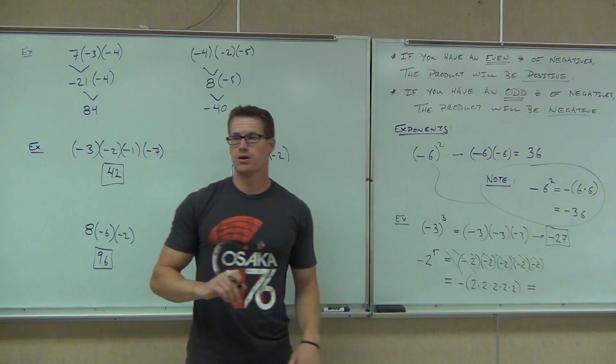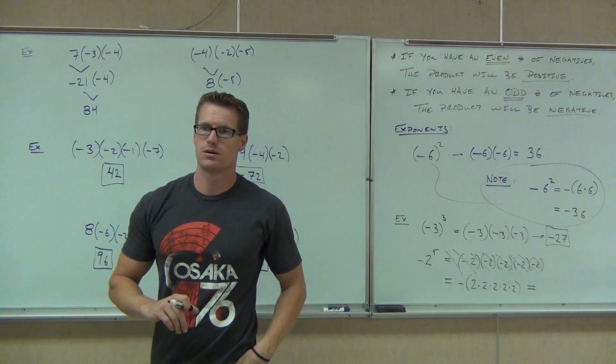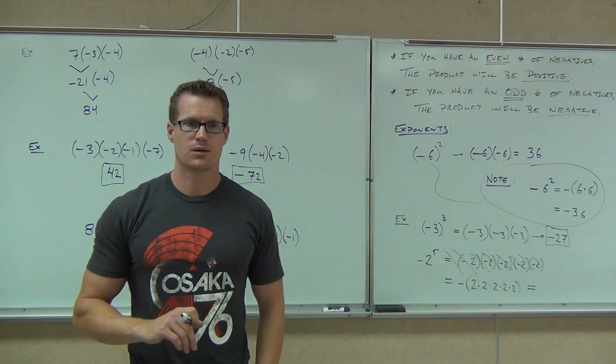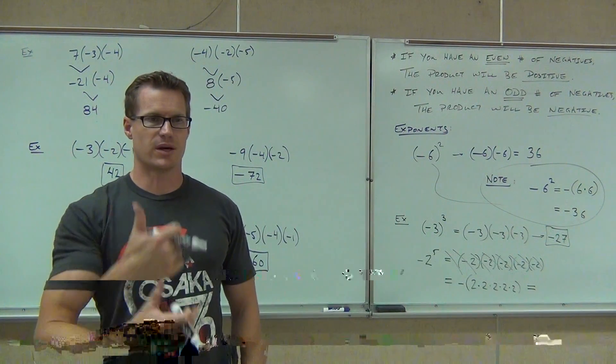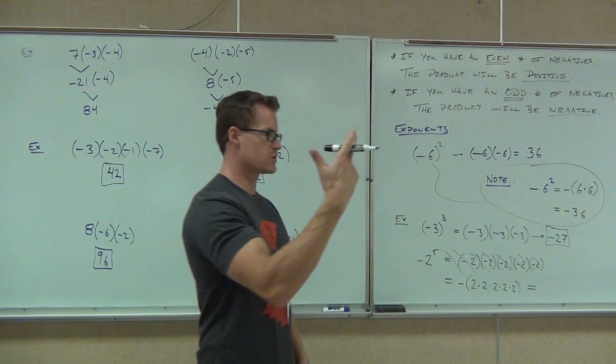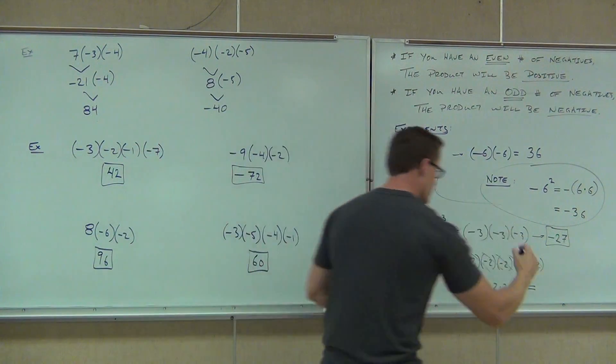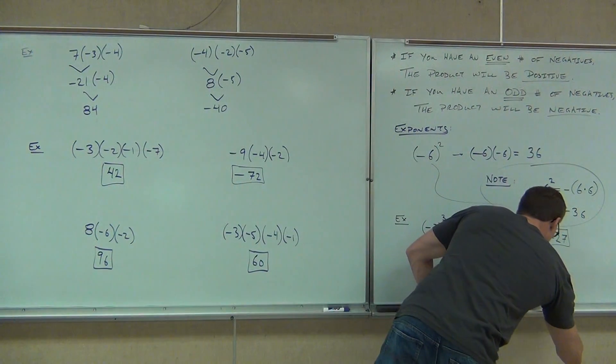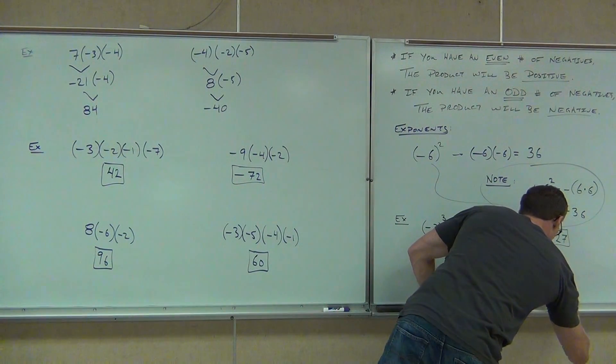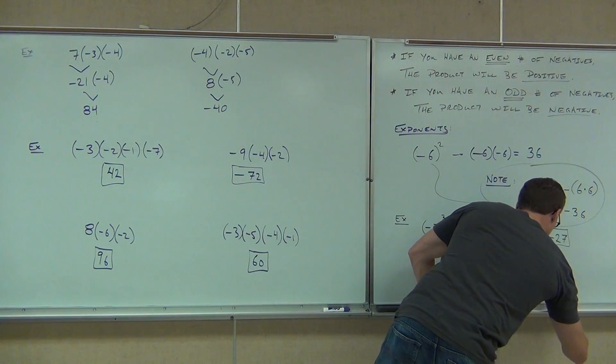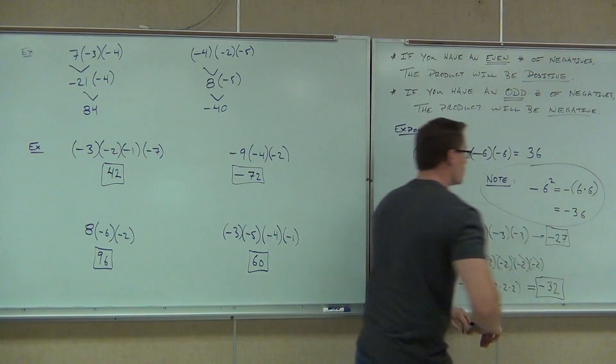What's our answer here? Negative 32. You get that by 2 times 2 times 2 times 2 times 2, and the result is negative.